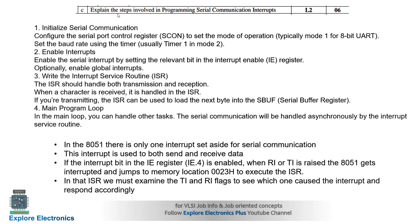The next question asks to explain the steps involved in programming serial communication interrupts. The steps include: configure the serial port control register SCON to set the mode of operation, enable interrupts, write the interrupt service routine, and then start the main program loop.